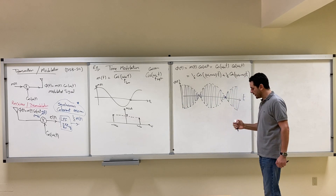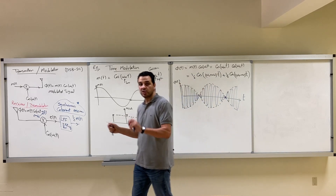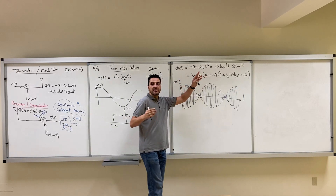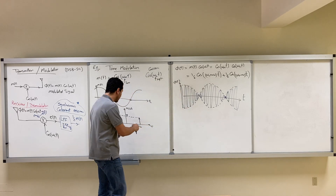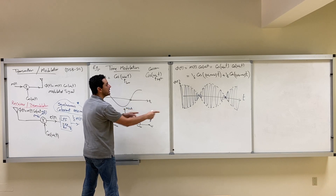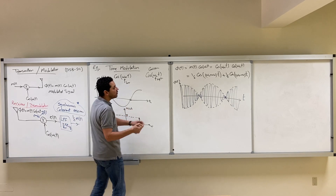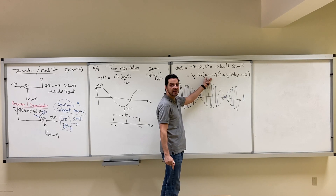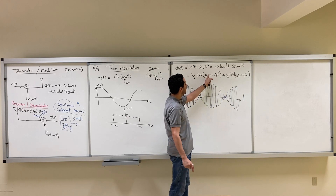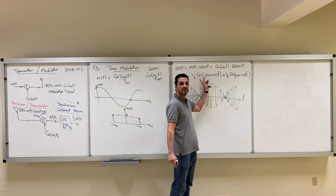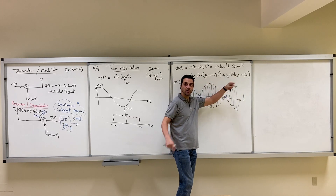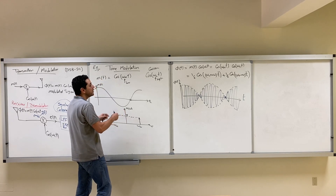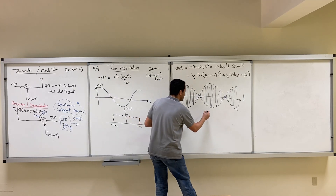Now for the frequency domain, it can be calculated in two ways. The first way: when we multiply any signal by cosine, the spectrum shifts right, shifts left, and divides by two. So the spectrum of M shifts right around omega_C, shifts left around negative omega_C, and divides by two. Alternatively, you can obtain it directly from the expression using trig identities.